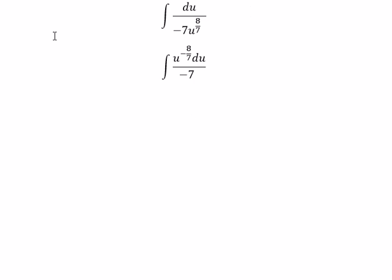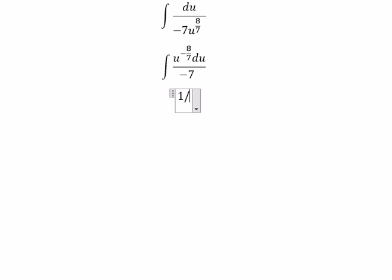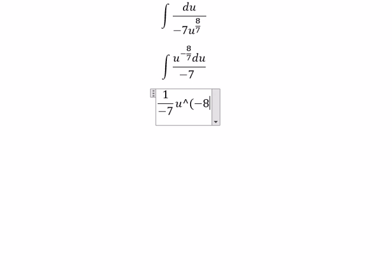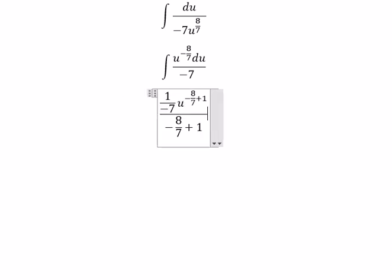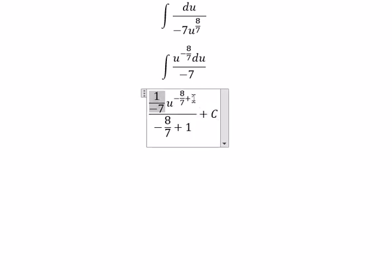Now we can get the final answer. The integral of u to the power of negative 8 over 7 gives u to the power of negative 8 over 7 plus 1, divided by negative 8 over 7 plus 1, plus C. This simplifies to negative 1 over 7 times u to the power of negative 1 over 7, plus C.